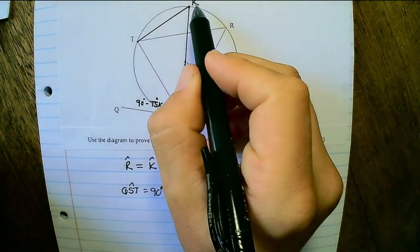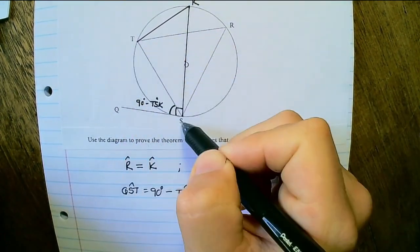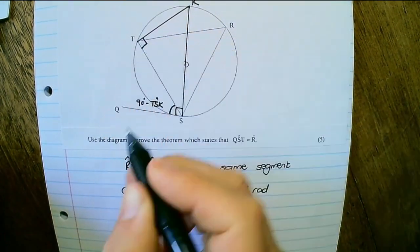And furthermore, we can see that the angle KTS is also 90 degrees.